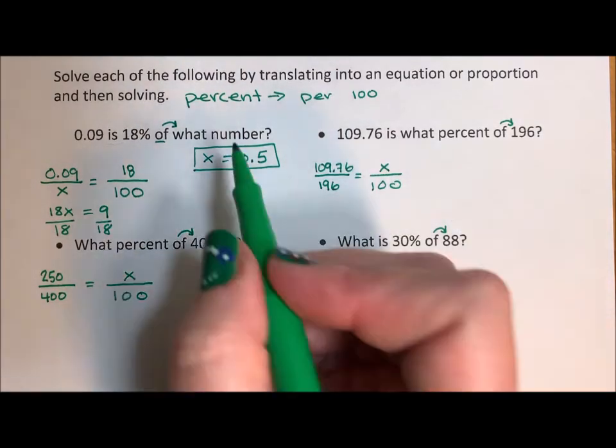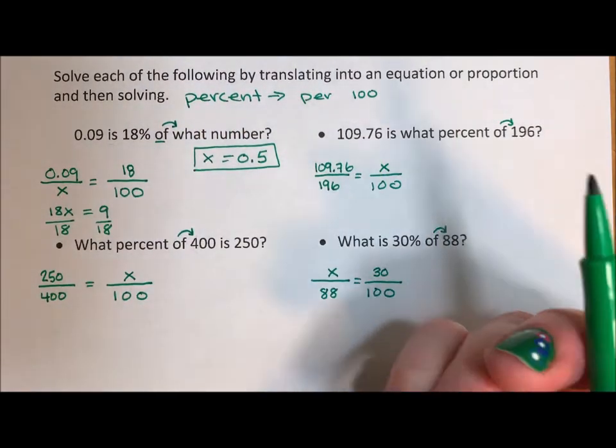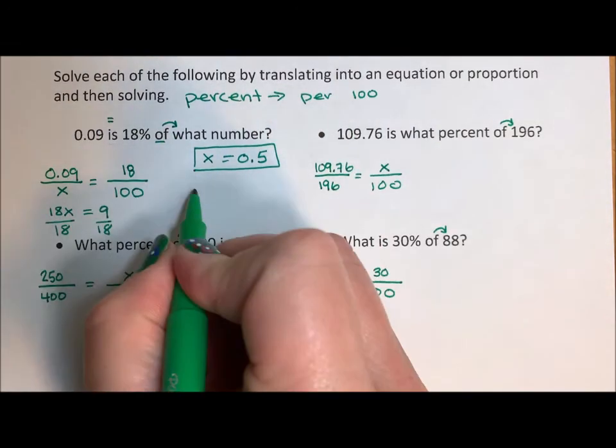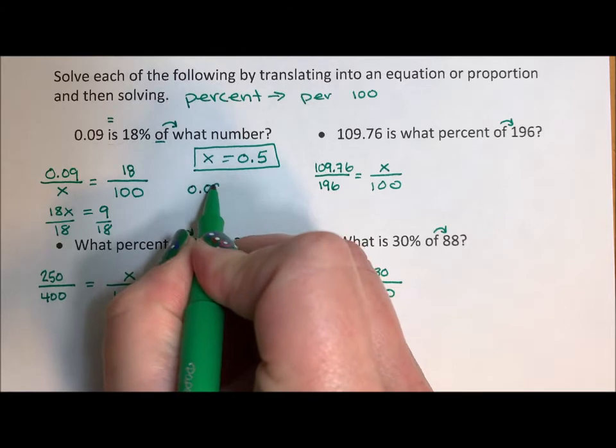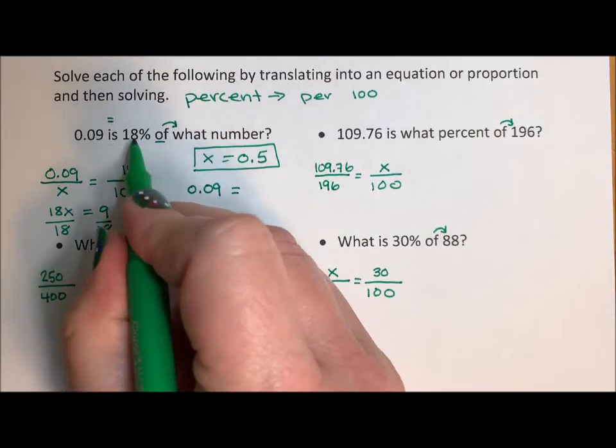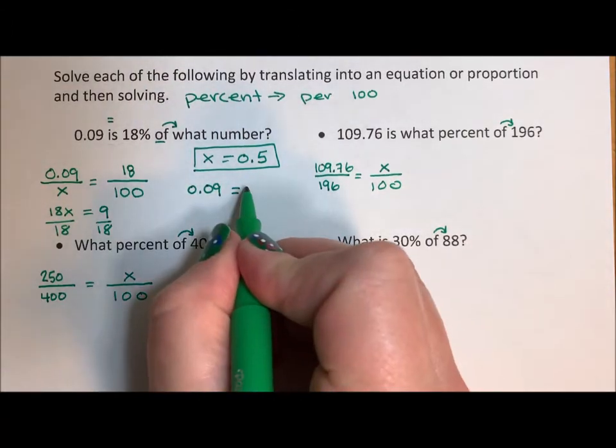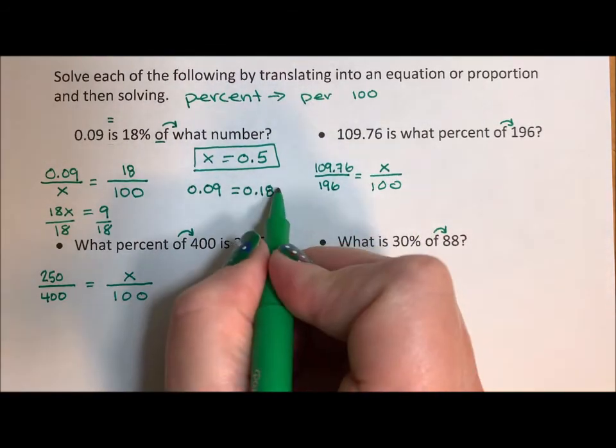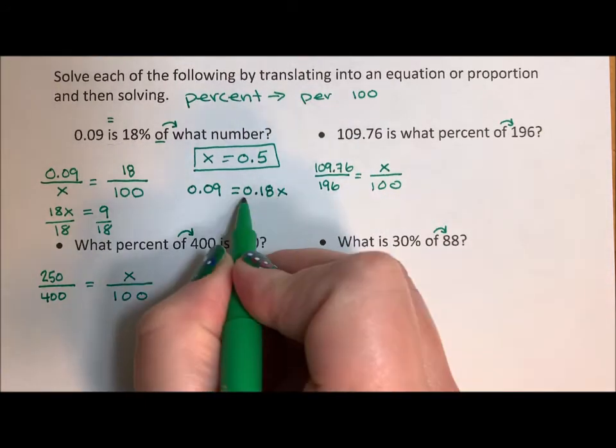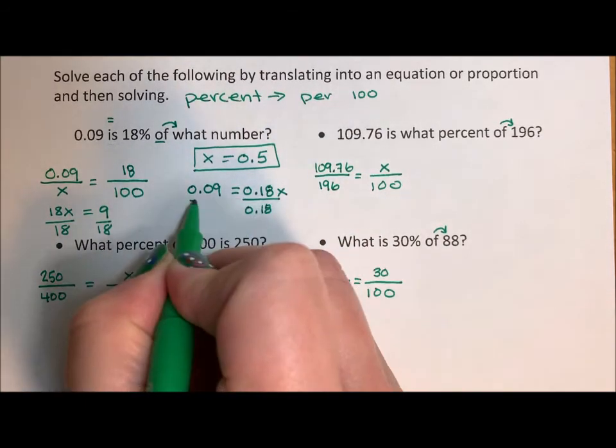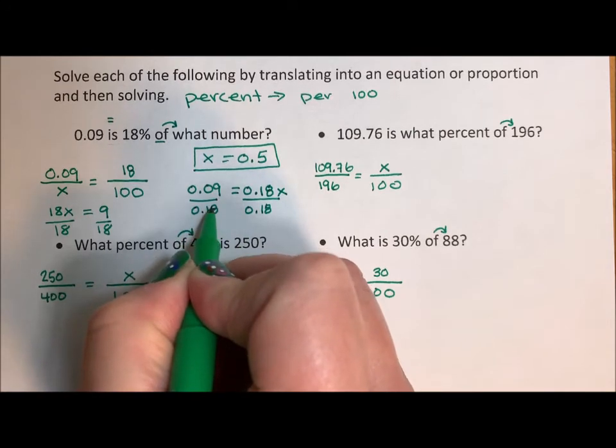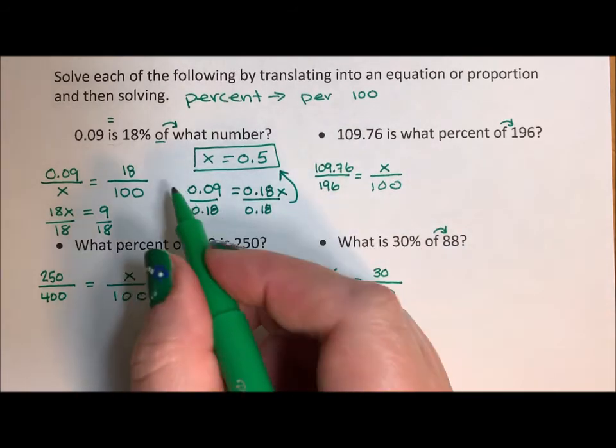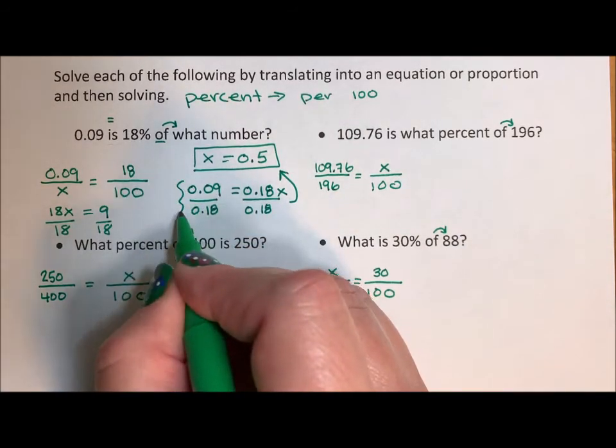Now I'm going to finish this problem off by translating it. When you translate it, the word is always becomes an equal sign. So 0.09 is, now 18% I'm going to translate that to a decimal, so 0.18 of what number. Then I divide both sides by 0.18. And when I divide this, I get X is 0.5. In this case, when I did the translation, I did read.